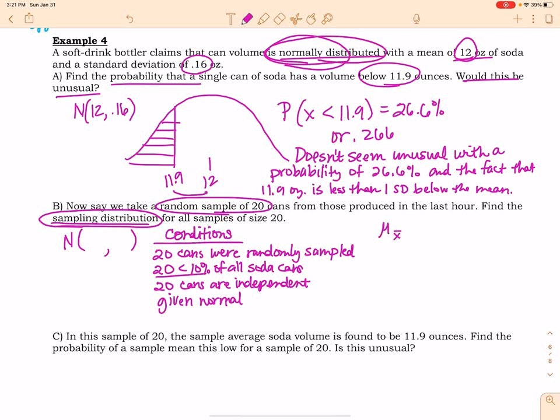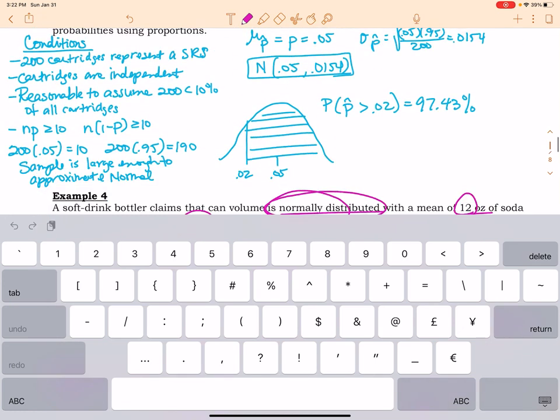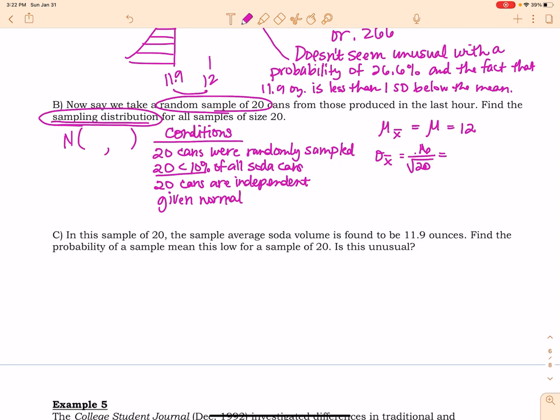So now I need to find my mean of X bar, and it is equal to mu, which is 12. So that works just like the proportion problems do. It is equal to the given amount for the population, the average, the population parameter average. And then my standard deviation for X bar, I am going to take the standard deviation I was given on part A, and I'm going to divide it by the square root of my sample size. That is how I determine my standard deviation. So my sampling distribution for all sampling sizes of 20 is this right here.